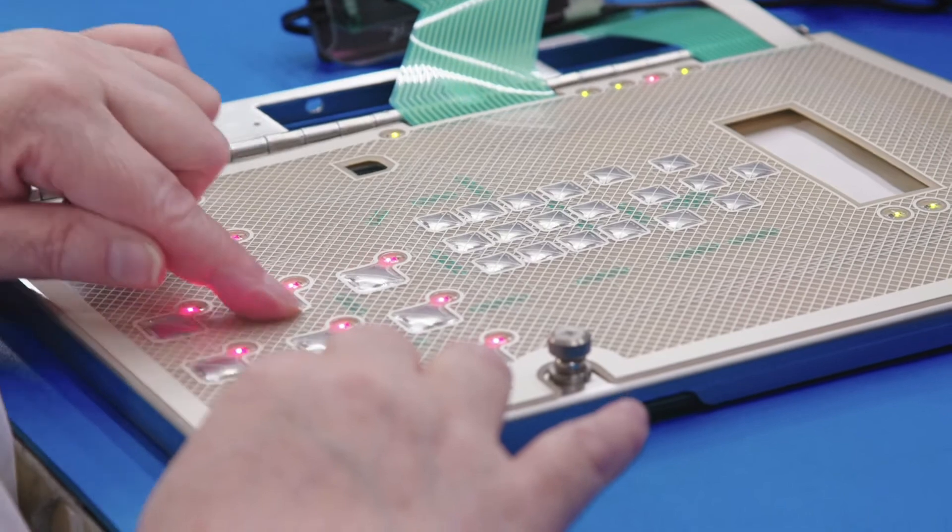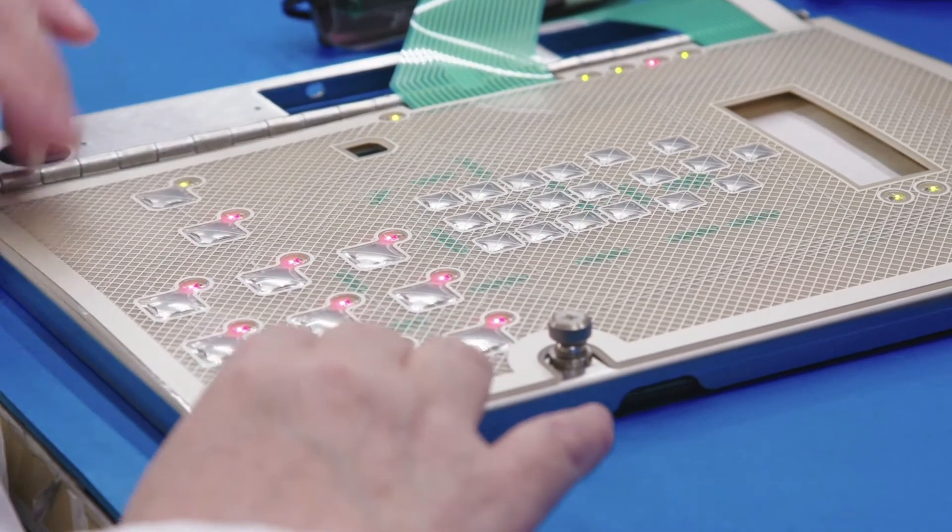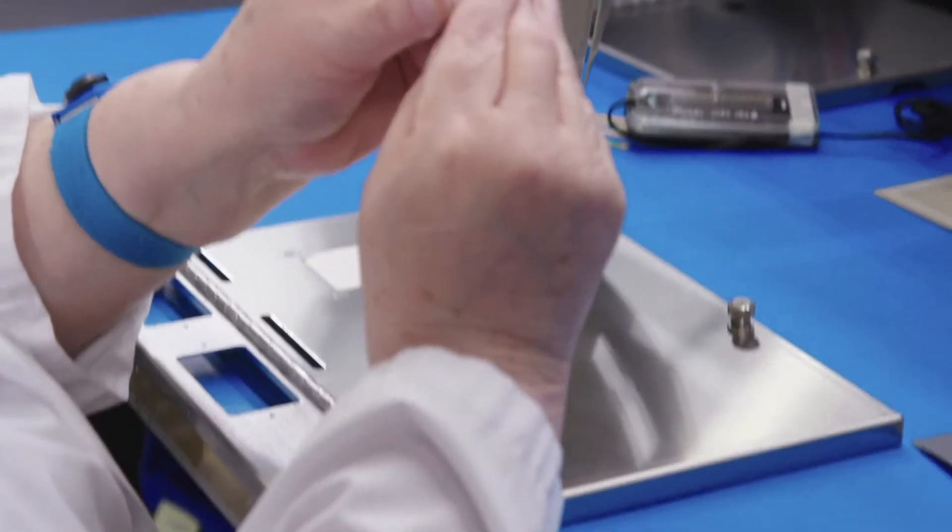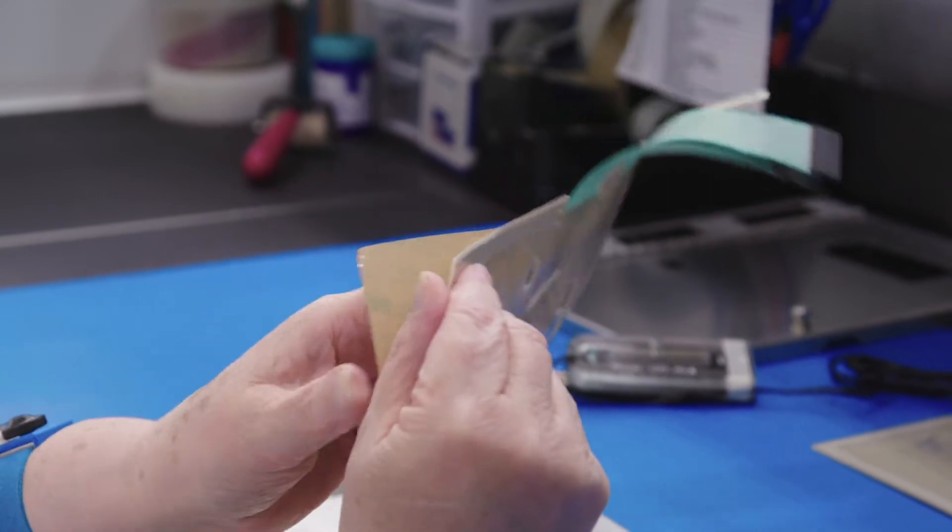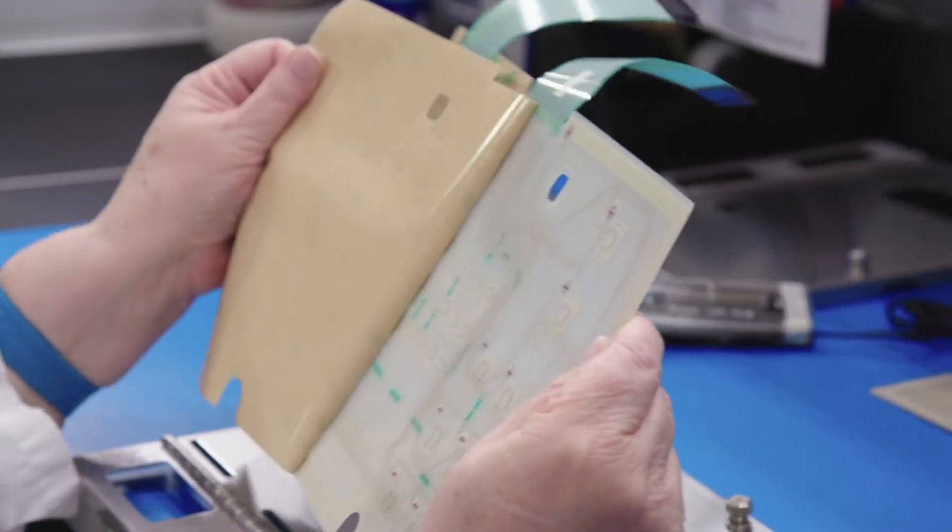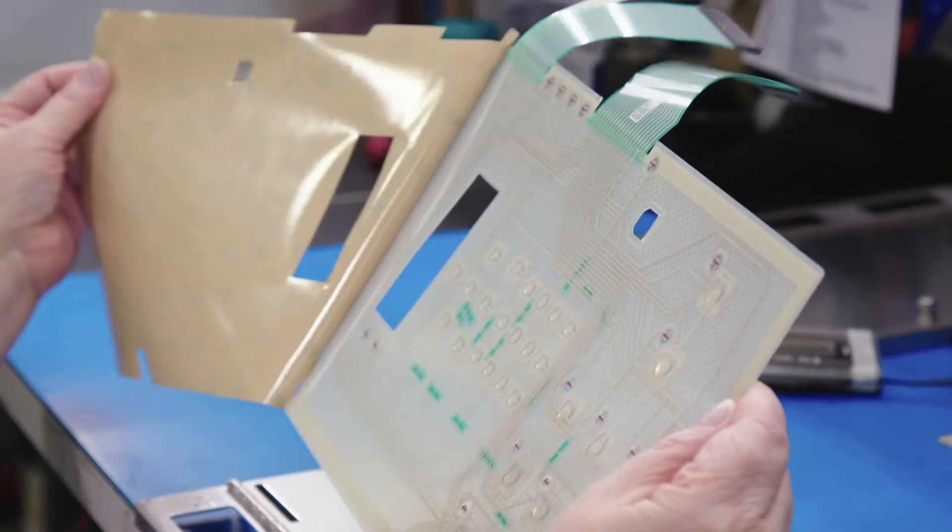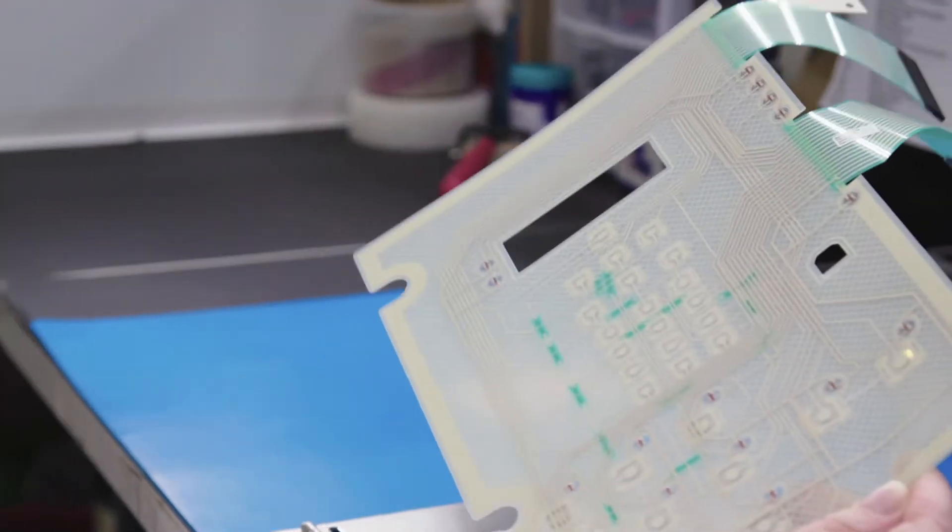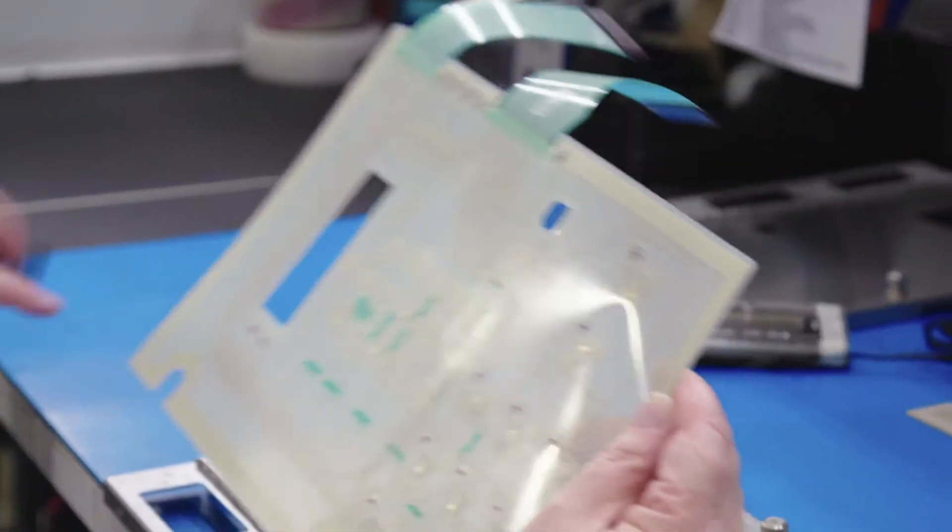So you'll notice throughout this video that the person doing the assembly is grounded for ESD. It's that blue wrist strap she's wearing on her left arm. That's critical to assure that the LEDs are not subjected to any unnecessary static charge.